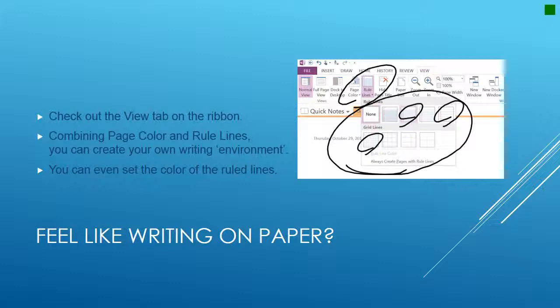Now if you feel like writing on paper — if you don't like writing in blank open space and need those lines to keep your writing together — using the View tab, go to Rule Lines. You'll see some different options: one that looks like paper, wide rule paper, or grid lines like graph paper. You can combine those together and make it feel like you're writing on actual paper even though it's digital on a computer.